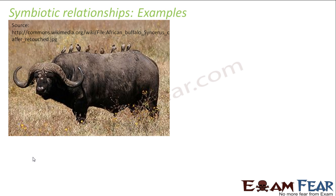Now, what kind of symbiotic relationship is this? The buffalo can still survive without the crow — it will just survive with those insects and ants. It is not directly dependent on the crow for its survival, but if the crow is there it gets some benefits. So this is a facultative symbiotic relationship.